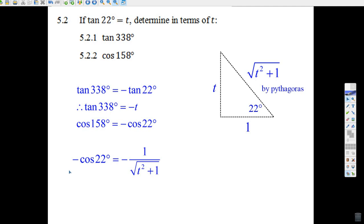Here's the second Pythagorean trigonometry question. They tell you that the tangent of 22 degrees equals t. Now the secret of that is, you can write that as t over 1.